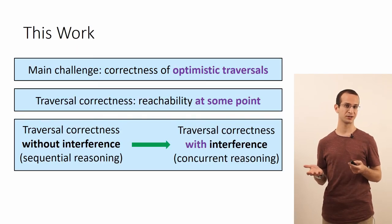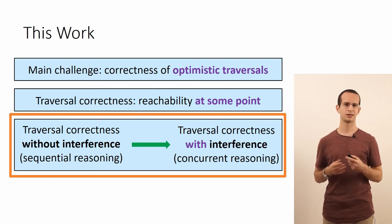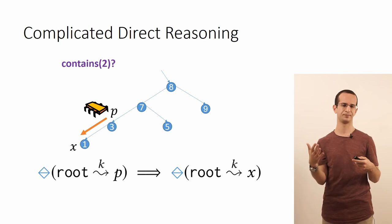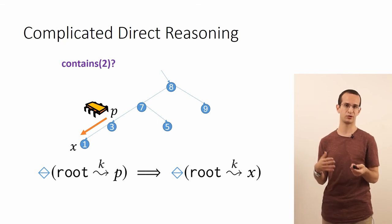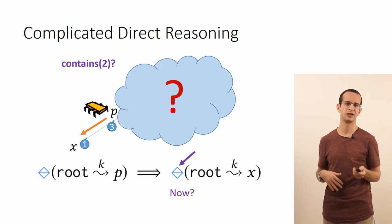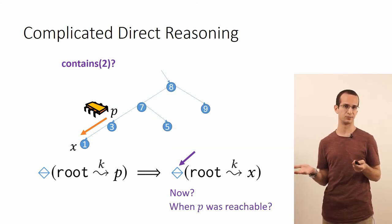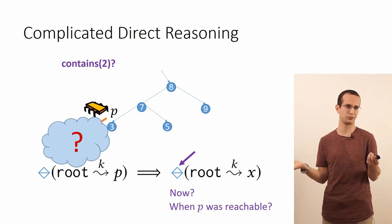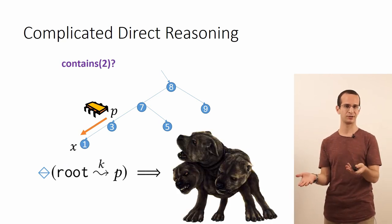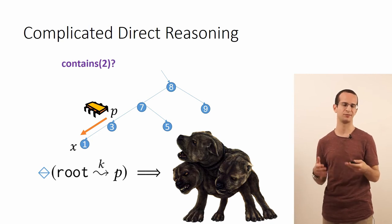We are now only left with the question of how to actually prove traversal correctness. Suppose you try to do it by direct reasoning, for example by a proof by induction on the steps of the traversal. So when the traversal takes the step from 3 to 1, you know that 3 has been reachable at some point. And you want to prove that 1 has been reachable at some point during the traversal. But when was this point? It's not necessarily now, because you don't know that 3 itself is reachable now. It's not necessarily back when 3 was reachable, because back then perhaps 3 didn't point to 1. So the proof needs to accommodate everything that could have happened from back then up until now, when the traversal performs the next step. And this gets out of hand very, very quickly.